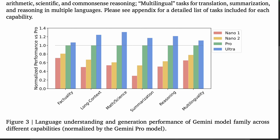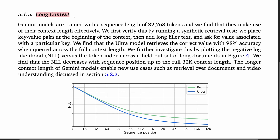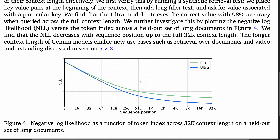To get a sense of the relative abilities of the various Gemini family members versus the Pro model — which is normalized here to have a score of 1 — we can see from this plot that Gemini Ultra provides the biggest gains on math and science, and the smallest gains on factuality. The smaller Nano models lose the most ground on summarization. When it comes to long context, it appears that Gemini models can indeed make use of the full context. A synthetic retrieval test places key-value pairs at the beginning of the context, adds long filler text, then asks the model for the value associated with a particular key. The Ultra model retrieves the correct value with 98% accuracy when queried across the full context length, and as you increase context size up to 32,000 tokens, the model gets better at predicting the next token, reflected in the lower negative log-likelihood loss.